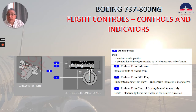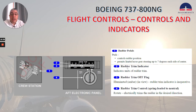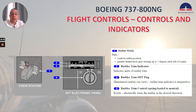At the cruise station, we have the rudder pedals. Push controls rudder position and permits limited nose gear steering up to seven degrees each side of center. In the aft electronic panel, we have the rudder trim indicator, which indicates units of rudder trim. We have the rudder trim off flag — illuminated amber in view — indicating the rudder trim indicator is inoperative. Number 4 is the rudder trim control — spring-loaded to neutral — rotate electrically trims the rudder in the desired direction.